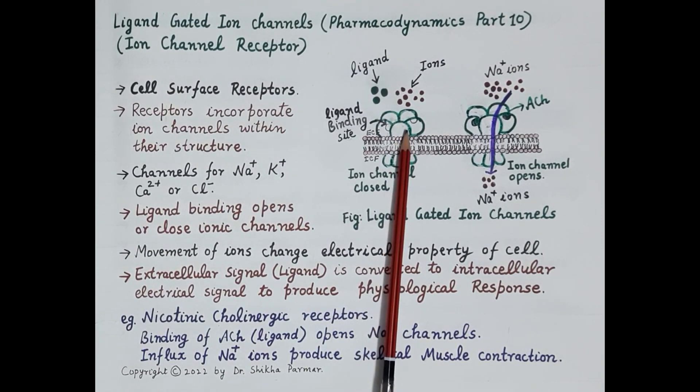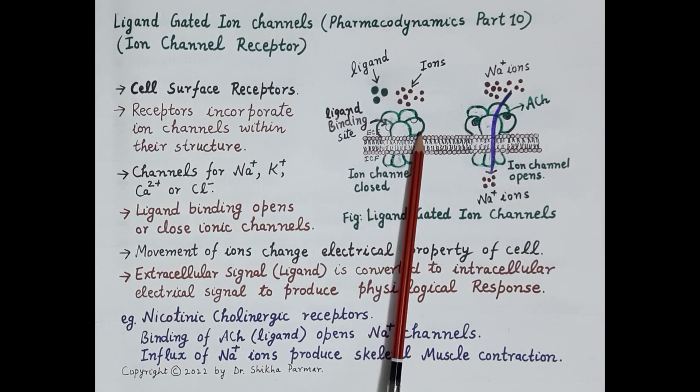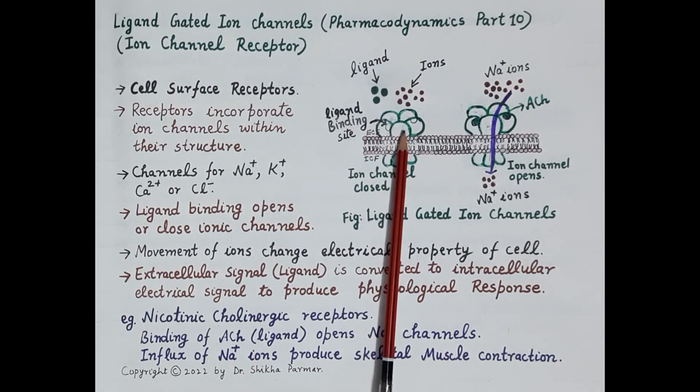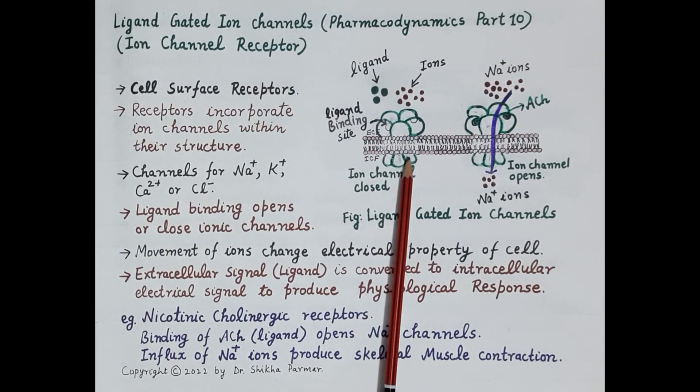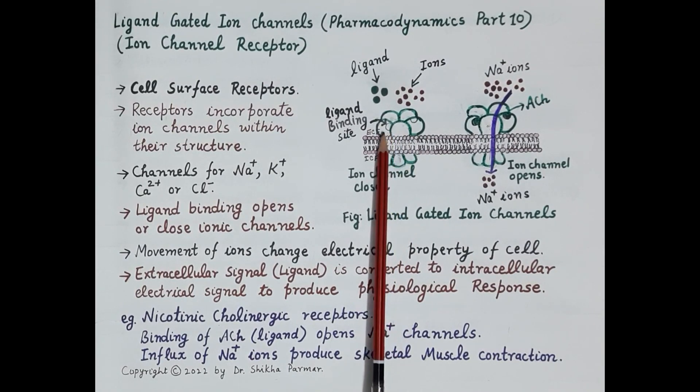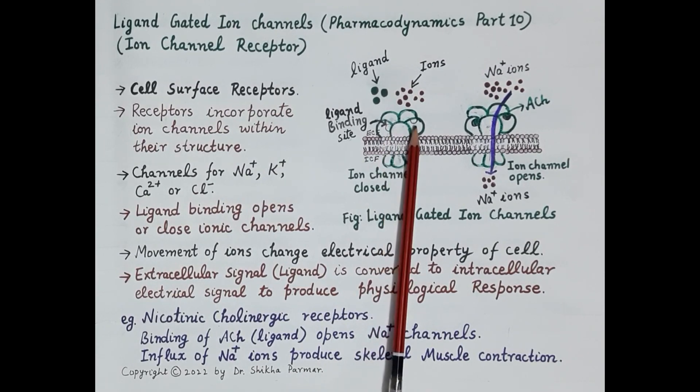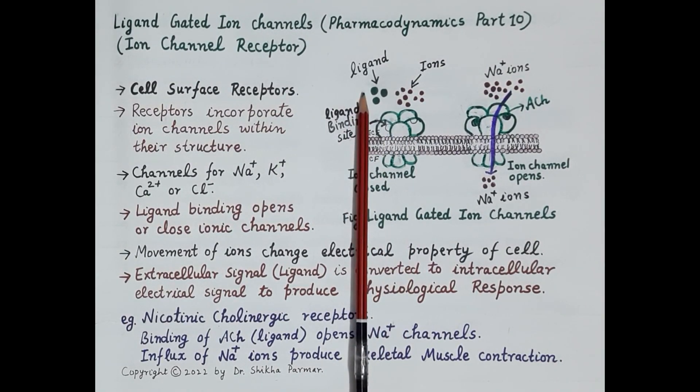These receptors are pentameric, meaning each receptor is made up of five subunits: one, two, three, four, and five. All five subunits are arranged around the ionic channel. The receptor also has ligand binding sites. Binding of ligand to these receptors either opens or closes the ionic channels enclosed within.